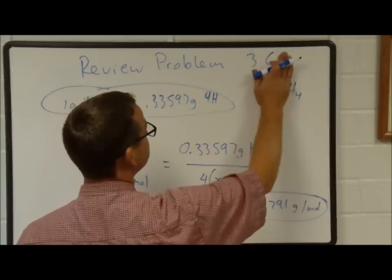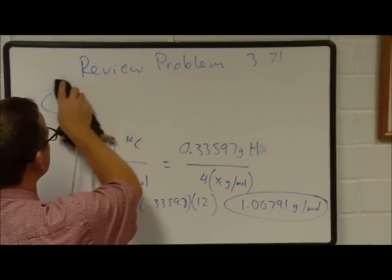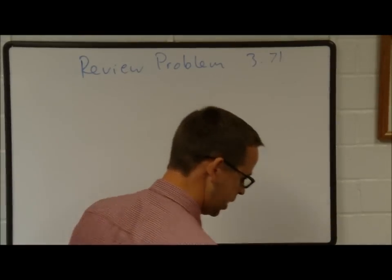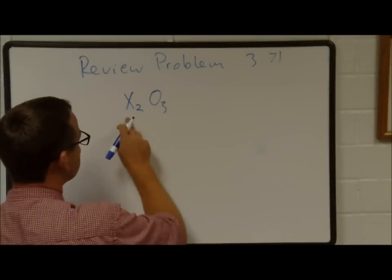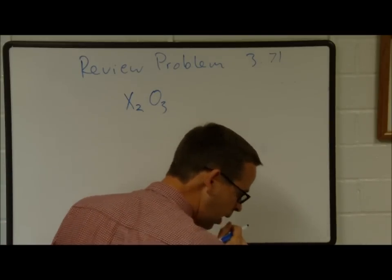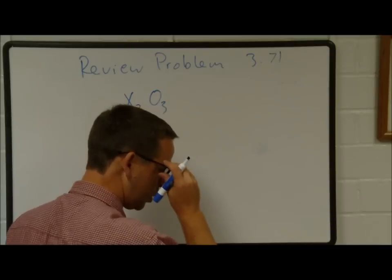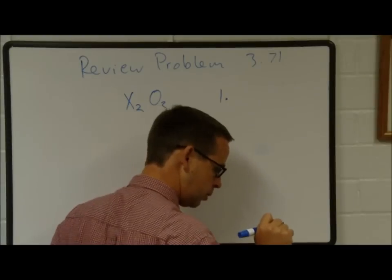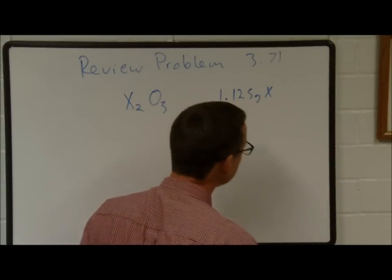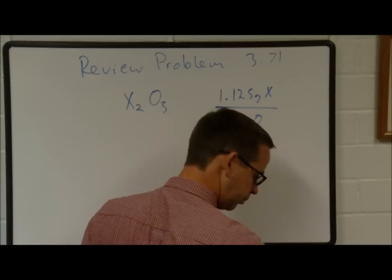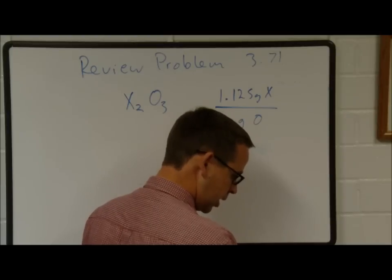Problem 371. A certain element X forms a compound with oxygen in which there are two atoms of X for every three atoms of oxygen — that's X2O3. In this compound, 1.125 grams of X are combined with one gram of oxygen. Use the average atomic mass of oxygen to calculate the average atomic mass of X, and use your calculated atomic mass to identify the chemical element X.